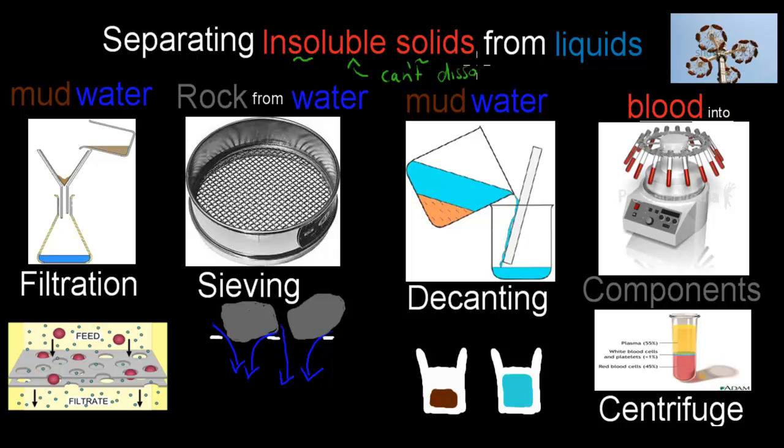For example, we've talked about sand can't dissolve. It will go to the bottom of a container because it's suspended. Also rocks can't dissolve. So an insoluble solid would be something that can't dissolve.